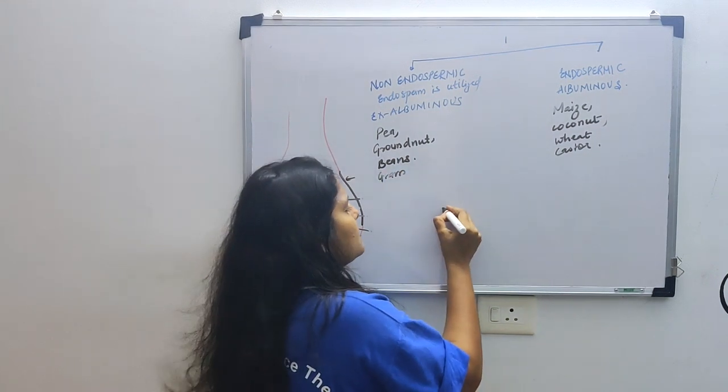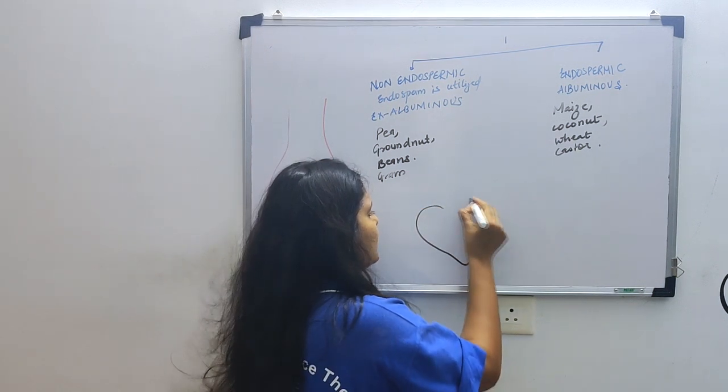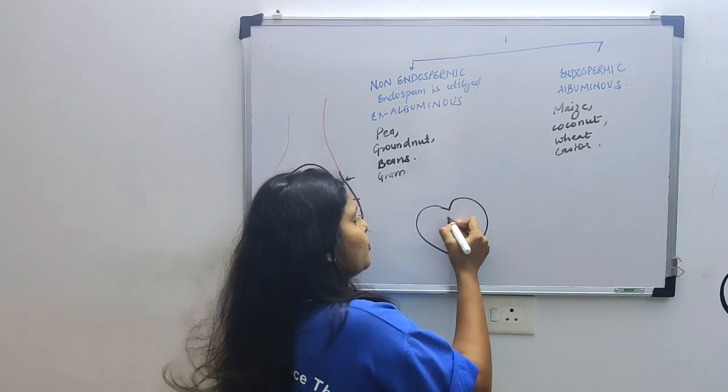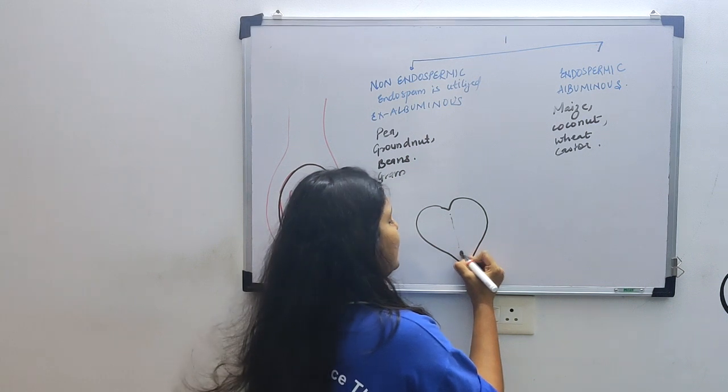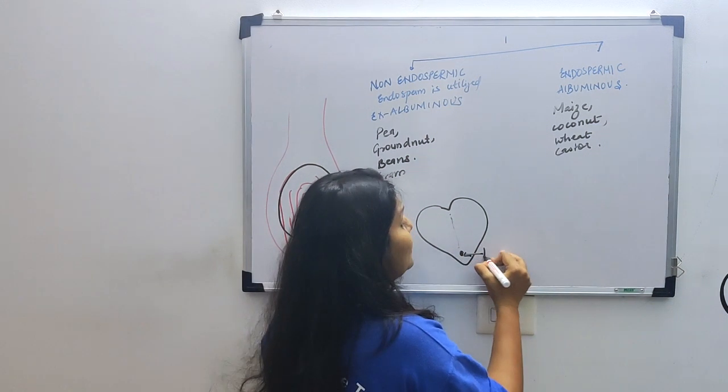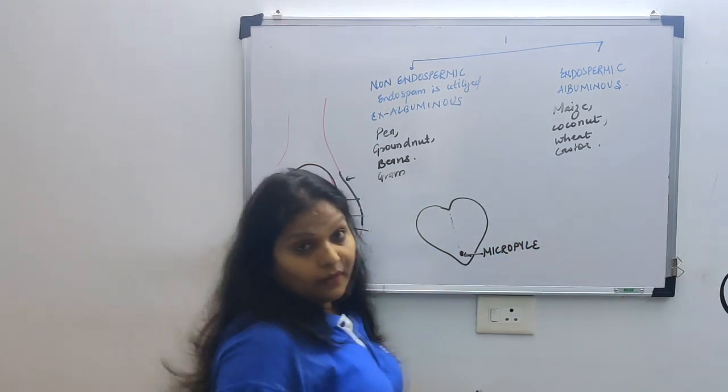If we look at gram, in gram seed you will see something like this, right? Gram seed, chana seed. In chana seed, if you look, you will see a thin line here, and you will see a depression here. This depression is nothing but micropyle. What is it? Micropyle.